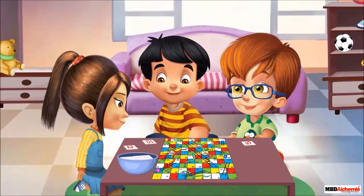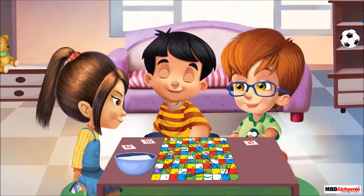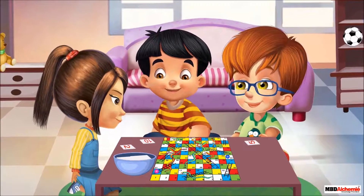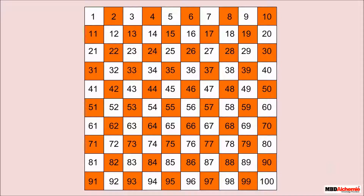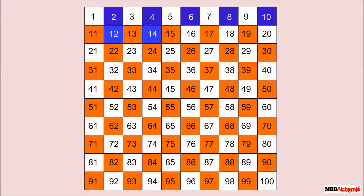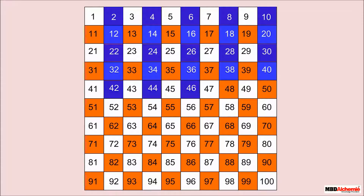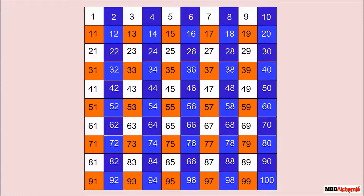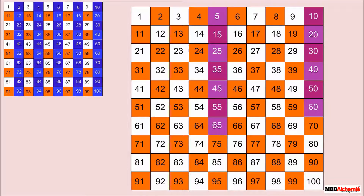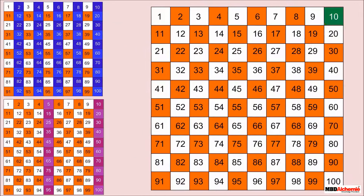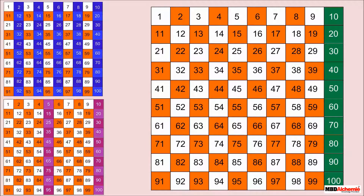Here we can see all three kids took forward jumps — in twos, fives, and tens. Let's see the same pattern here: forward counting in twos, forward counting in fives, and forward counting in tens.